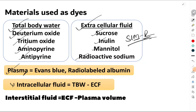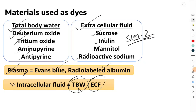For measurement of plasma, we use Evans blue and radio-labeled albumin. Intracellular fluid can be measured indirectly by calculating total body water and extracellular fluid and subtracting the two. This is the overview regarding the body fluids — thank you for listening.